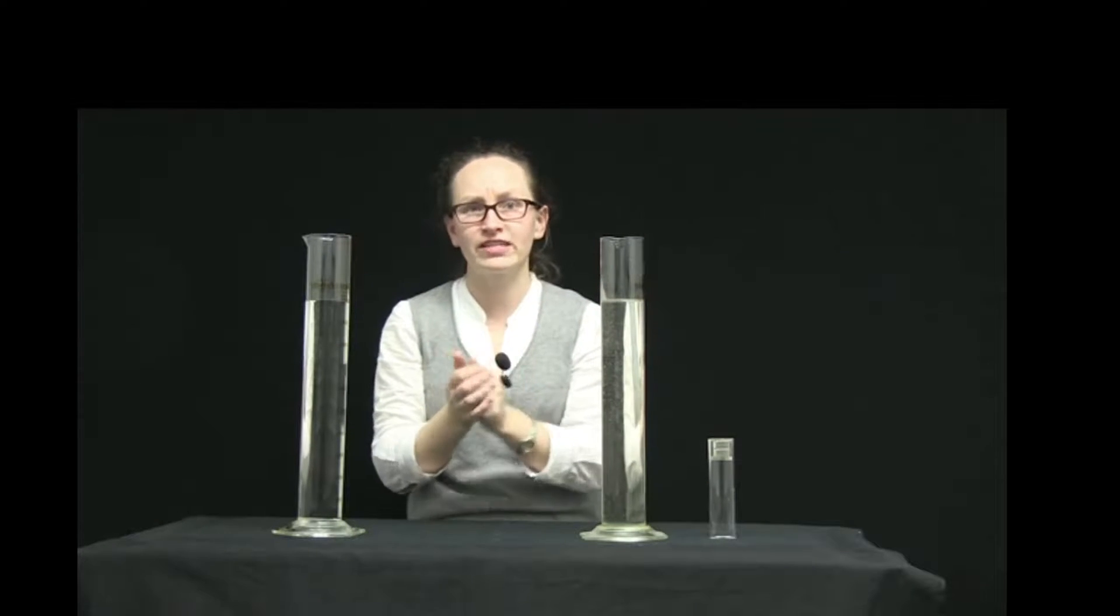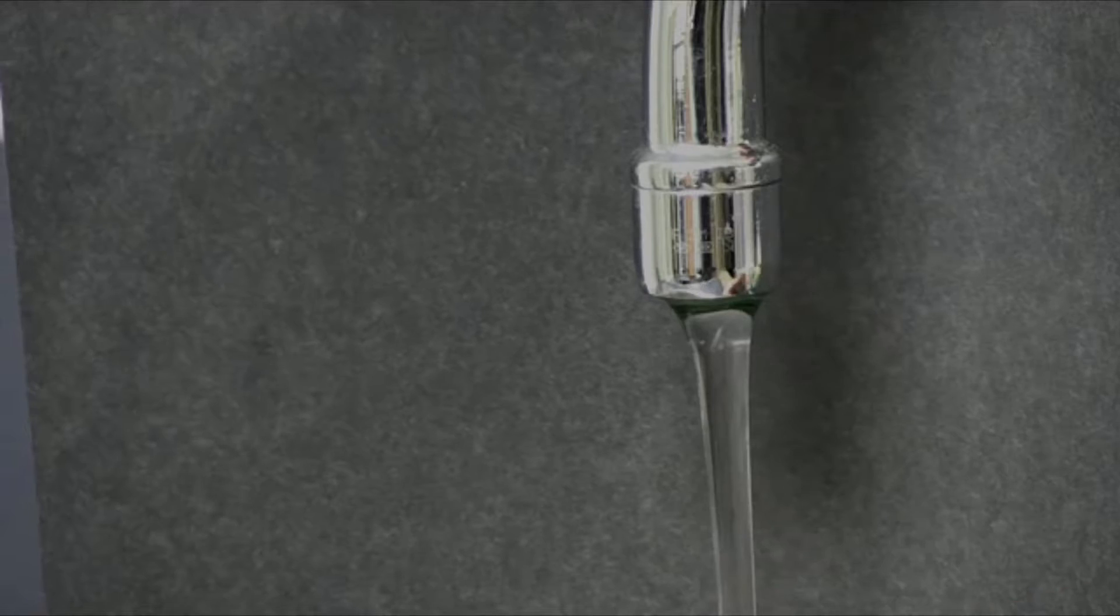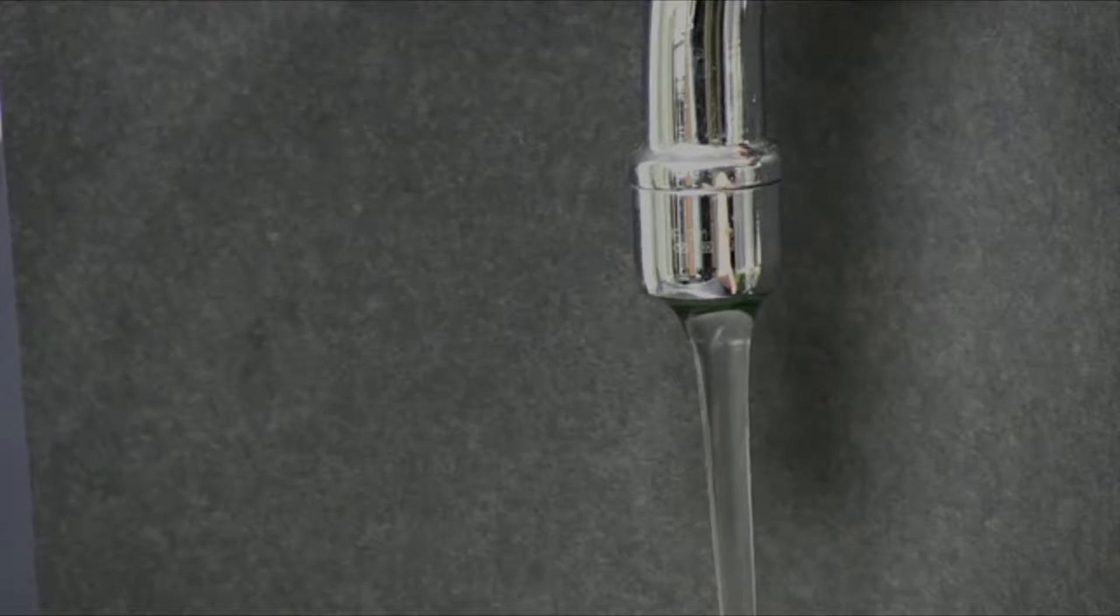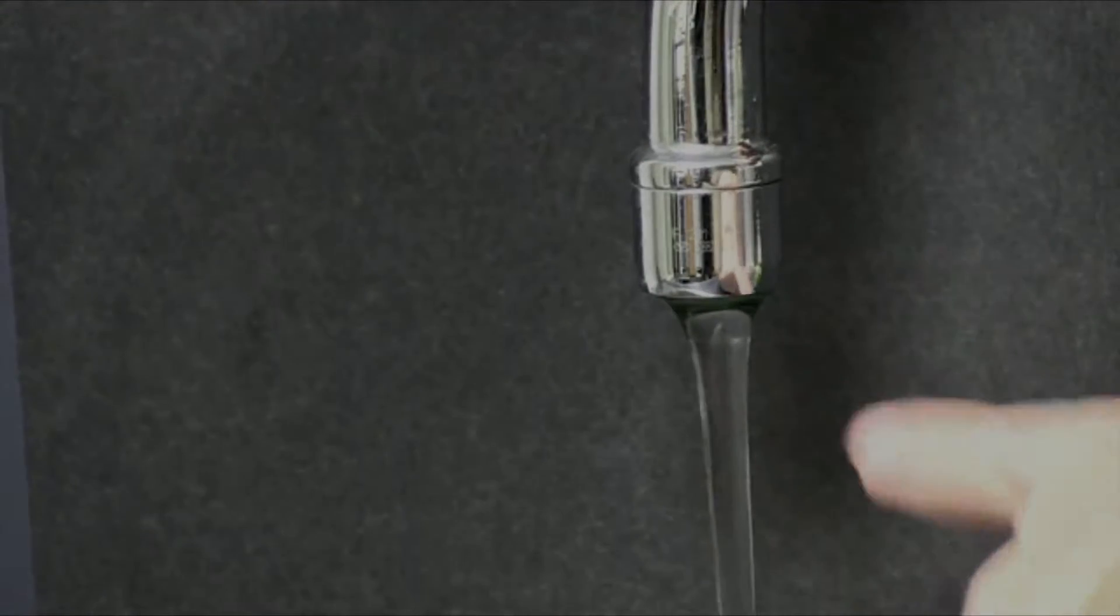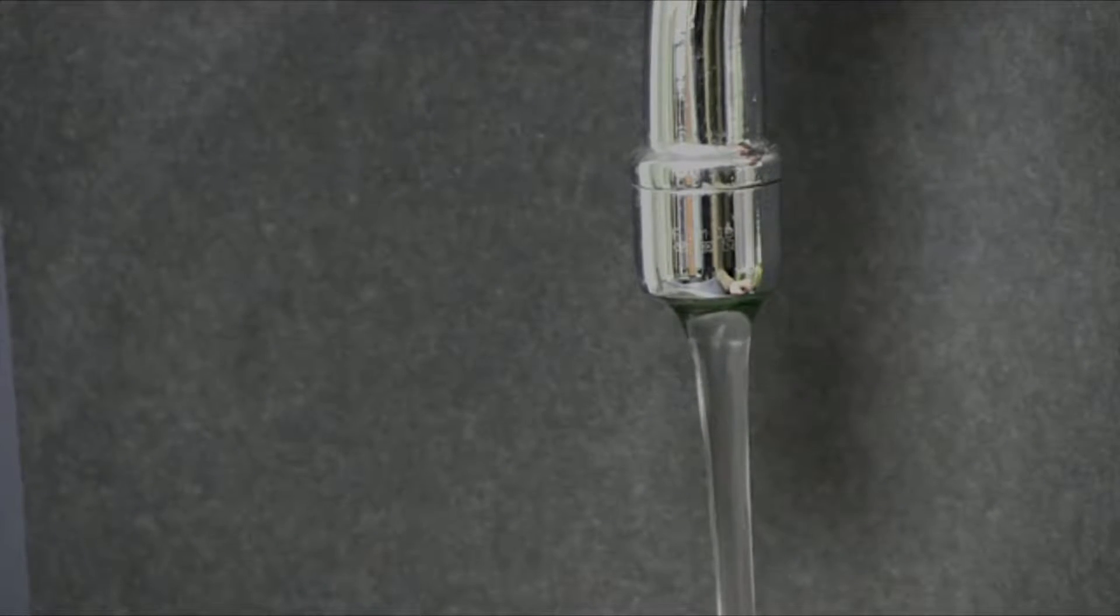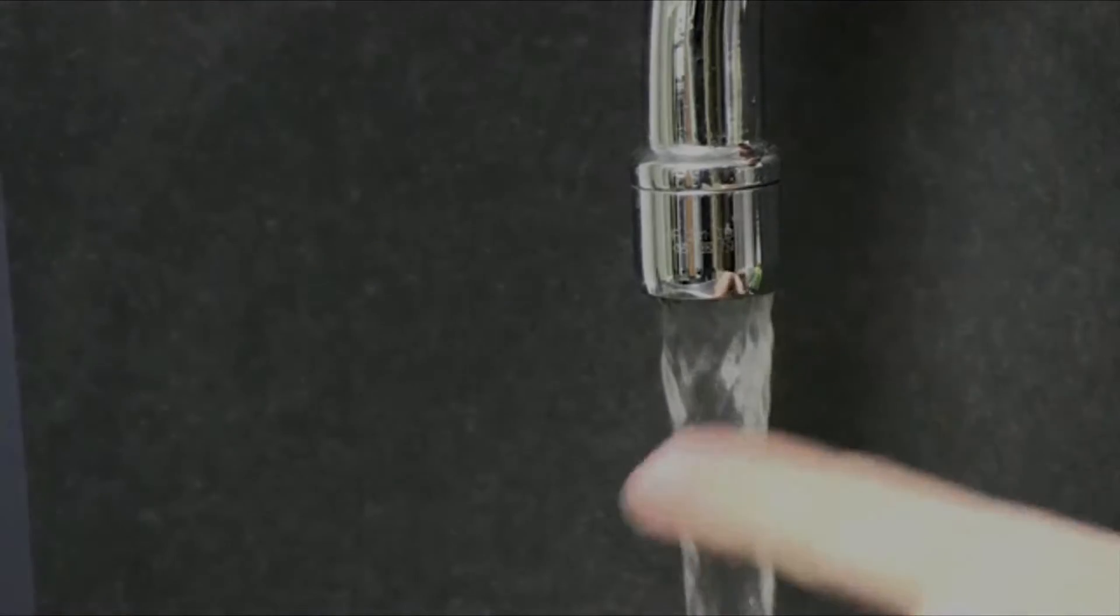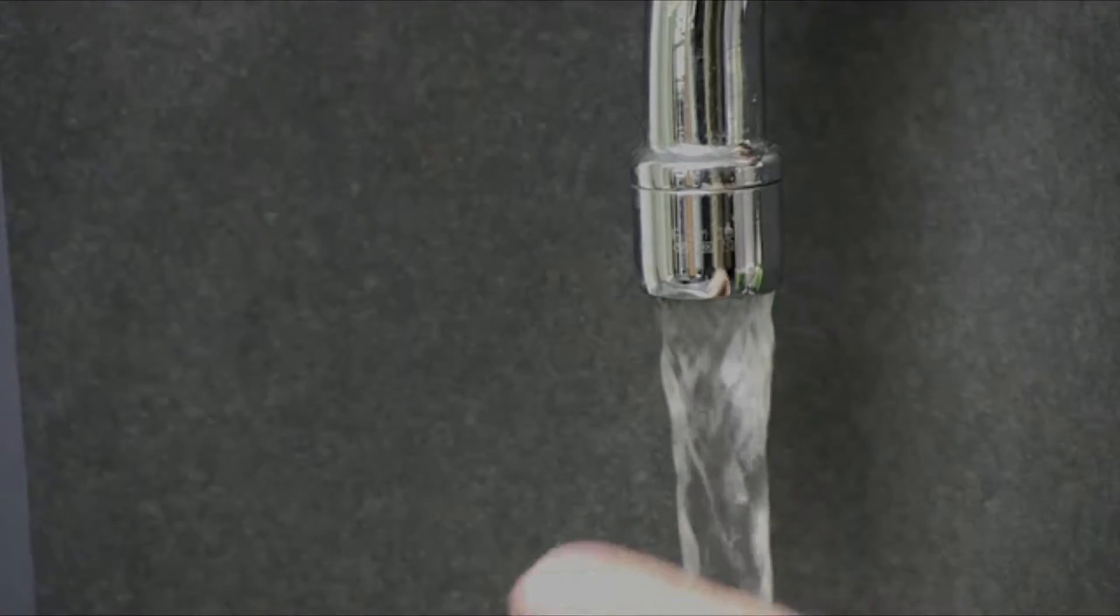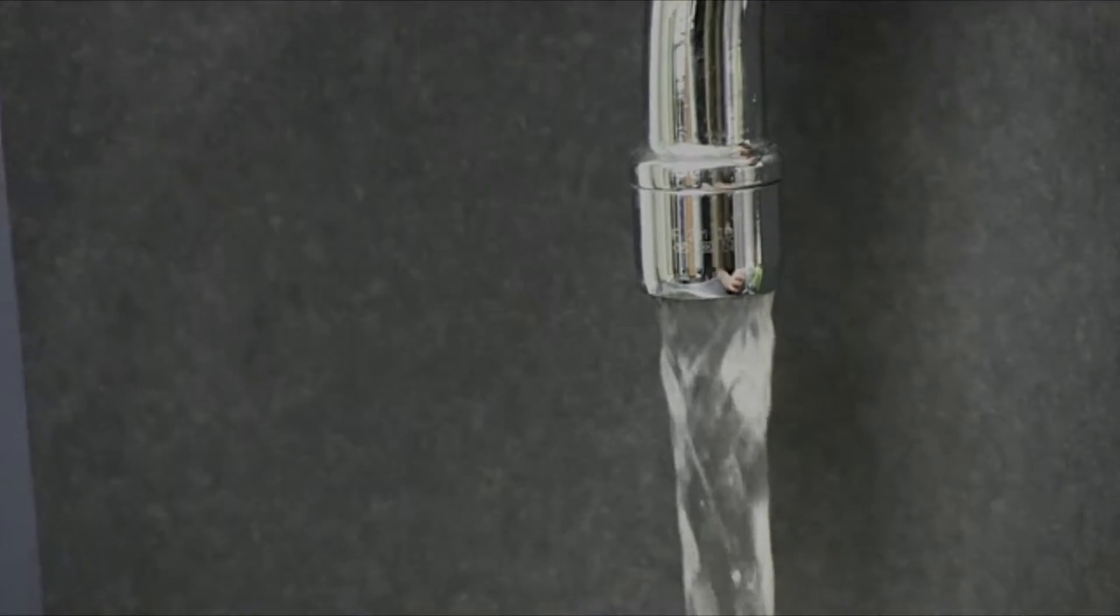We can see the onset of turbulence when we turn on a tap. If we turn on a tap gently to start with, you can see initially we've got this laminar flow because there's no bubbles or anything in this fluid flow here. All the particles making up the water are moving downwards with the same velocity. If we turn up the amount of fluid flow, you can see that we begin to get turbulent flow. Some of these water molecules are moving a bit to the left, some are moving a bit to the right. On average they're all moving downwards, but this is turbulent flow.